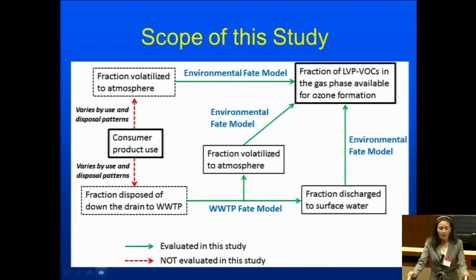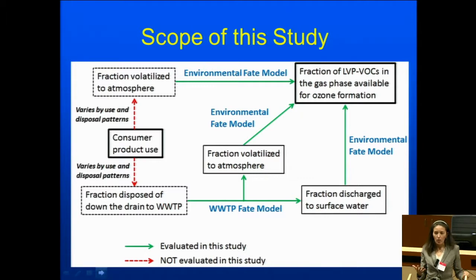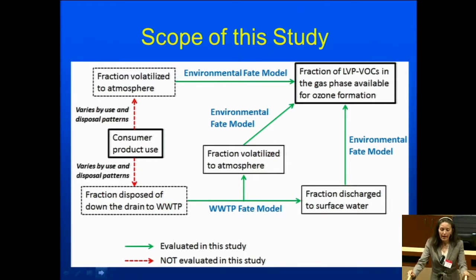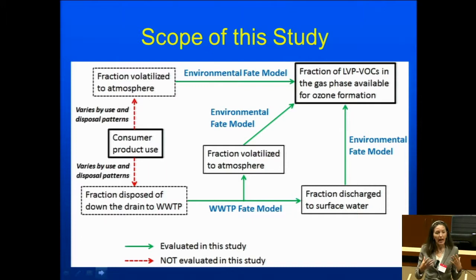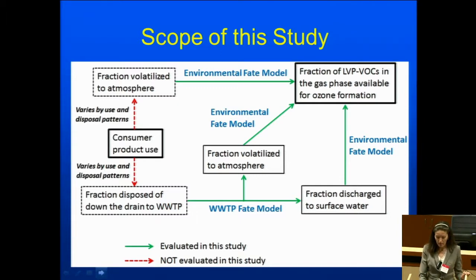If a chemical is released into the atmosphere during consumer product use, we need to ascertain what the fate and transport of that chemical is once released into the air. Does it stay in the air where it might react and have the potential to form ozone, or does it transfer to another environmental media where it might be degraded, or is it advected downwind? What we are doing in this particular project are the green arrows — how much of the chemical goes into the air versus what fraction is disposed of down the drain during consumer product use. Those other pathways are beyond the scope of this study.